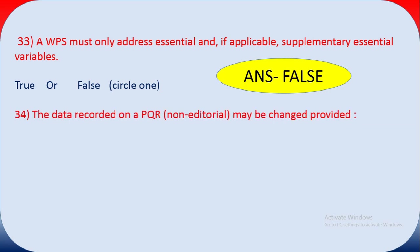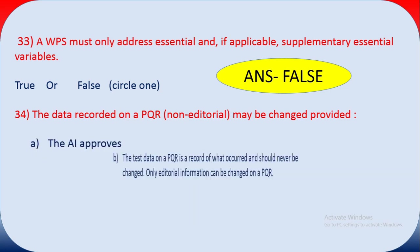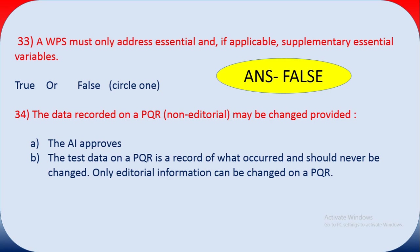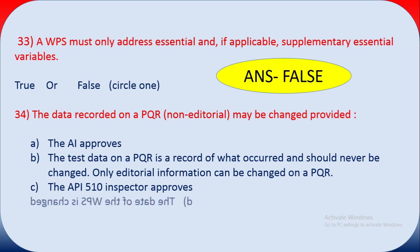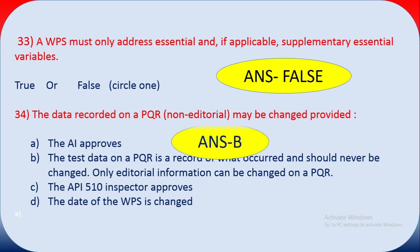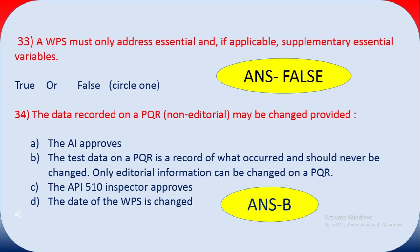Question thirty-four: non-editorial data recorded on a PQR may be changed provided — what? The test data on a PQR records what occurred and should never be changed. Only additional editorial information can be added. The answer is B — the test data of the PQR record cannot be changed; you can only add information based on any updates.